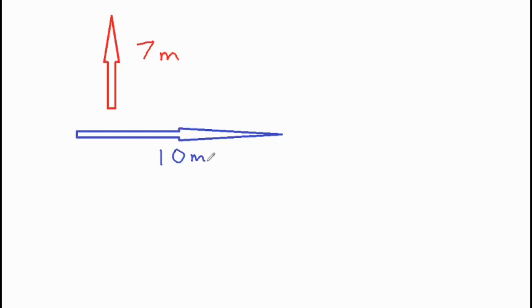Same thing with the horizontal ones. If they're both pointing to the right or both pointing to the left, you're going to add them up. If they're pointing in opposite directions, you're going to subtract them.